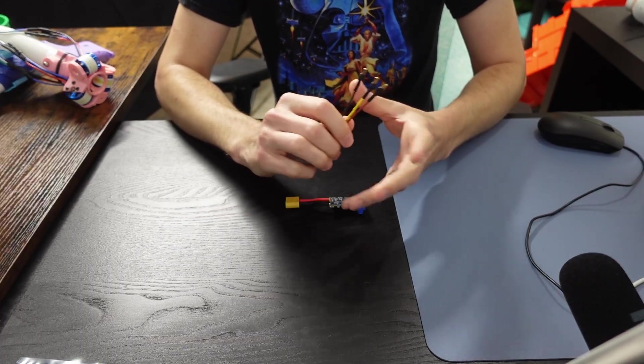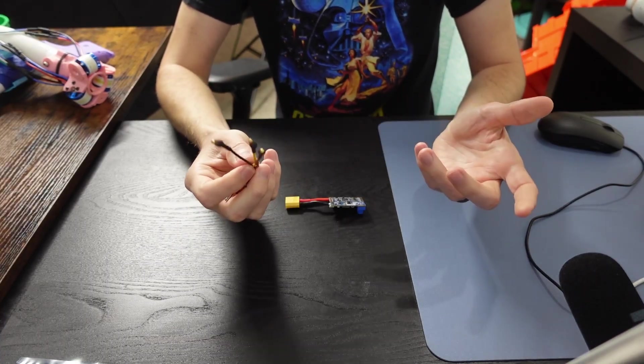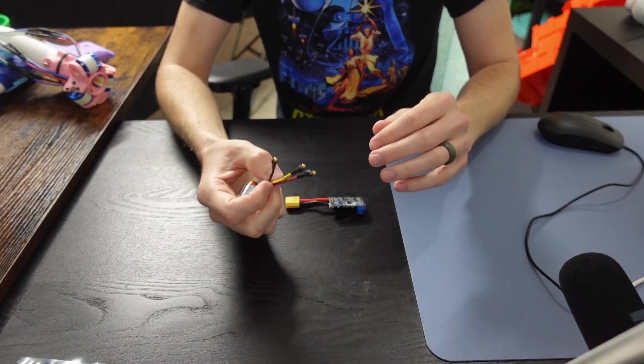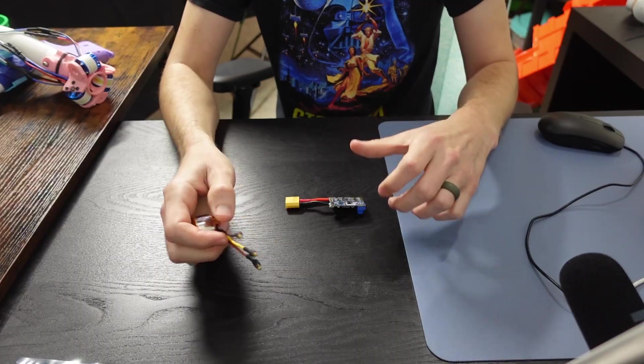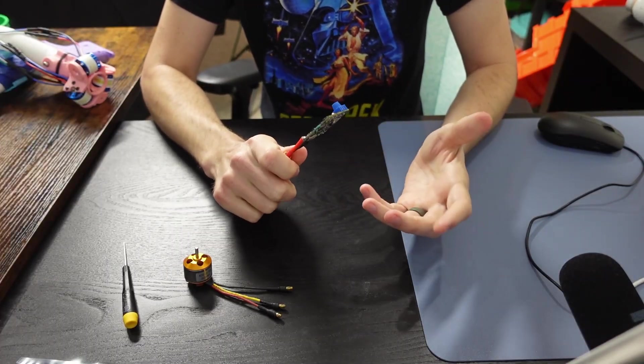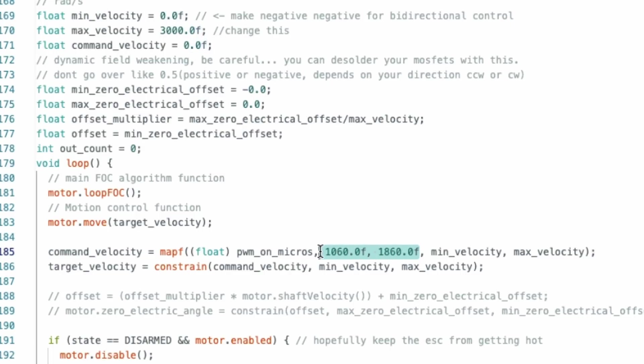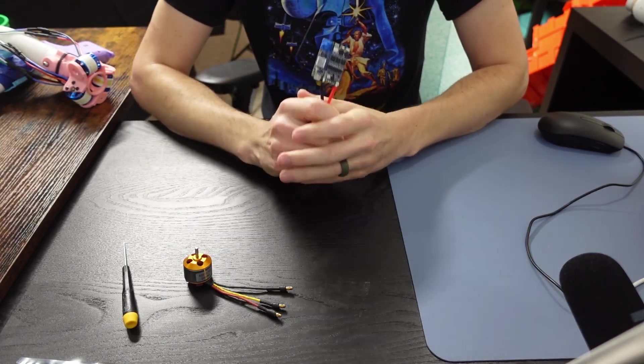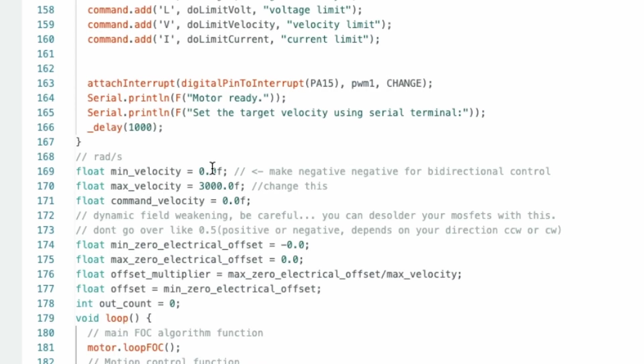Now, modifying the firmware to do bi-directional control is genuinely pretty simple. Right now, it's set up to accept a normal PWM signal on pin PA15. That's this one here. Our PWM signal from our controller goes from about 1,000 to 2,000 microseconds, which maps the minimum to the maximum velocity values. This is in radians per second, 0 to 3,000.